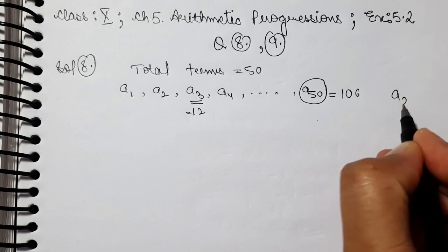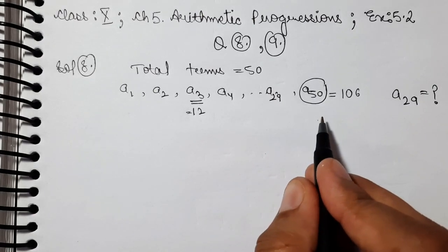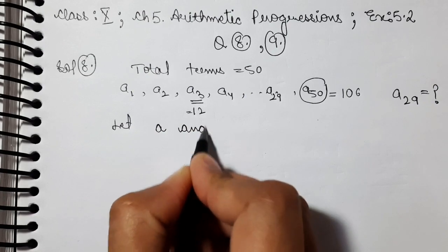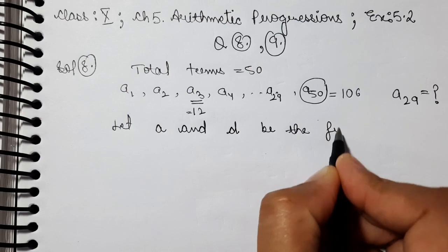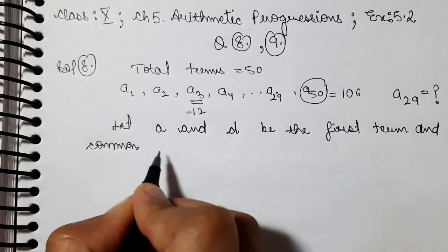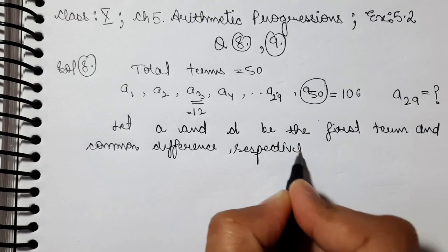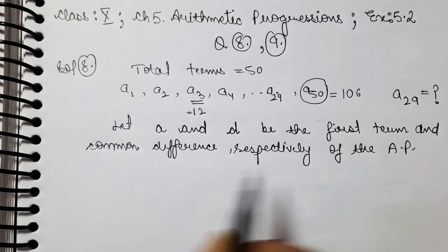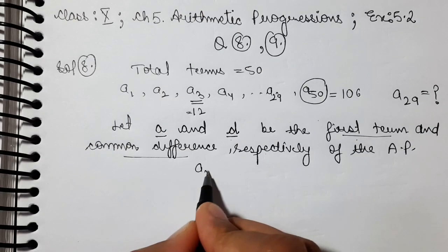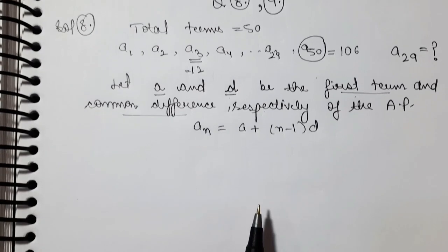We will find the 29th term — that is A29. Let A and D be the first term and common difference respectively of the given AP. A is our first term and D is the common difference. According to the formula, we will use An = A + (N−1) × D. Whatever is given and whatever we need to find, we will substitute accordingly.